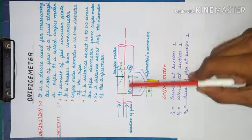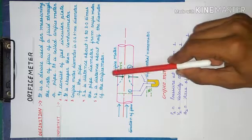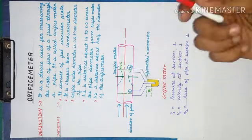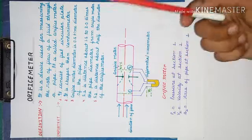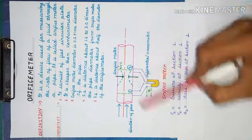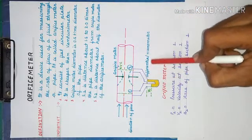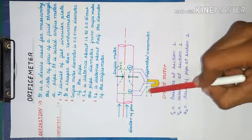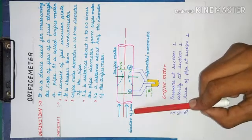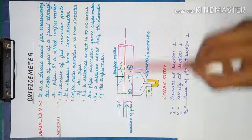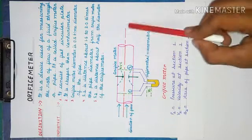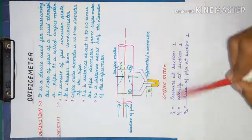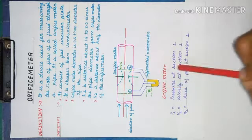This is section one and this is section two. The green line shows the orifice meter, which is known as the orifice plate. This is the differential manometer which indicates the pressure head. This is the direction of flow of fluid flowing throughout the pipe.